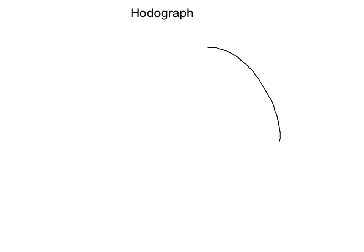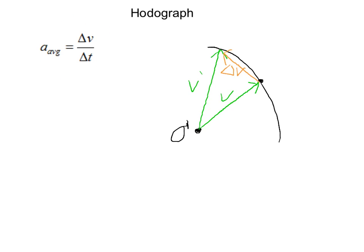Now we're going to look at what's called a hodograph. We have another path of a particle, but our origin is now o prime because we put our velocity vectors at the origin. Here's our velocity at r and our velocity at r prime. By doing this you end up with a change in velocity. Average acceleration equals the change in velocity over the change in time, and instantaneous acceleration equals the instantaneous change in velocity with respect to time, or the double derivative of r with respect to time.